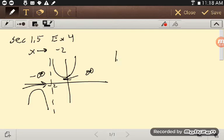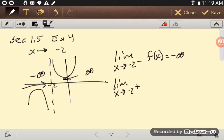And so we could say the limit as x goes to negative 2 from the left of f of x is minus infinity. And the limit as x goes to negative 2 from the right of f of x is positive infinity.